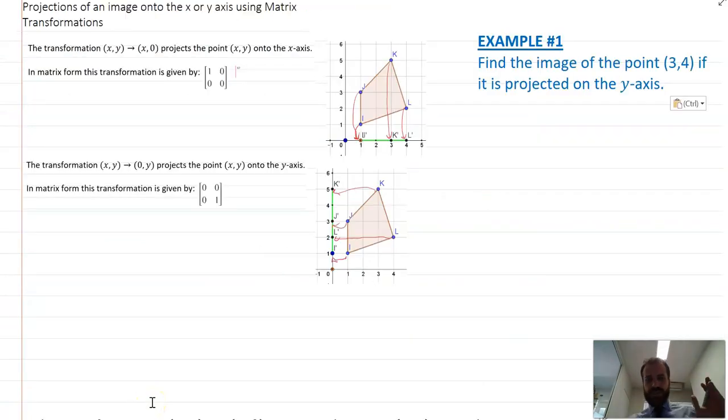Just for the sake of completeness, let's do an example. Find the image of the point (3,4) if it is projected on the Y axis. So I'll just really quickly talk about what it kind of looks like. There's the image of the point (3,4). So (3,4) is like right there if I were to draw it. And we're projecting it onto the Y axis. So I know what the answer is going to be. It's going to be (0,4). But how can we show that using our matrix transformation?